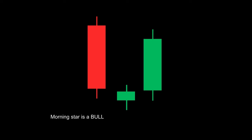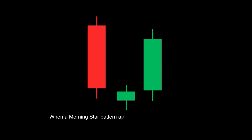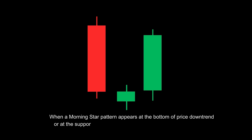The morning star candlestick pattern brings joy — it is a bullish reversal candlestick pattern consisting of three candles: a large bearish candlestick, a small-bodied candlestick, and a bullish candle. When a morning star pattern appears at the bottom of a price downtrend or at the support of a trend, this signifies that the downtrend is nearing its end.